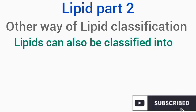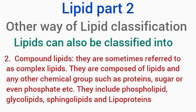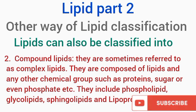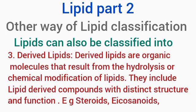Lipids can also be classified into simple lipids, which include fats, oils, and wax, and compound lipids. Compound lipids, sometimes referred to as complex lipids, are composed of lipids and any other group of organic or inorganic compounds, such as protein, sugar, or phosphate groups. They include phospholipids, glycolipids, sphingolipids, and lipoproteins. Another group is called derived lipids — organic molecules that result from the hydrolysis or chemical modifications of lipids. They include compounds such as steroids and eicosanoids.